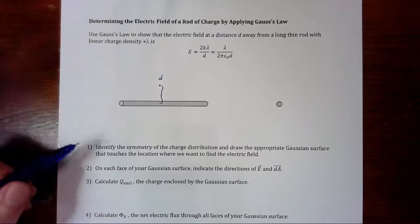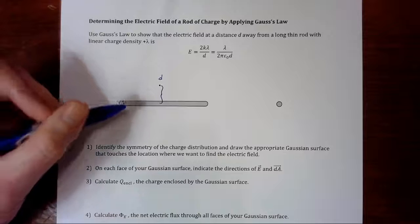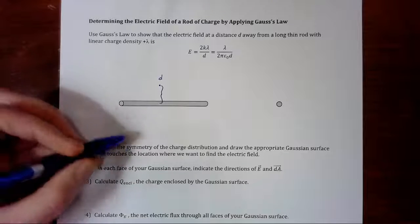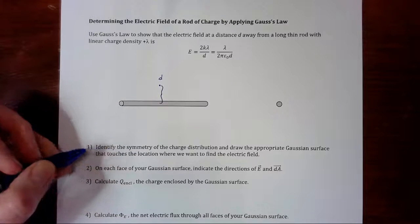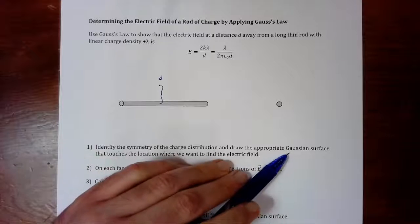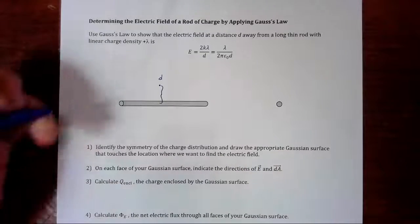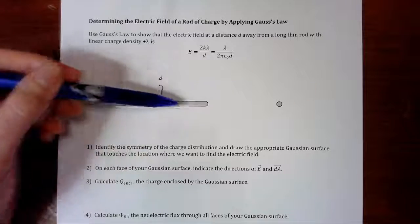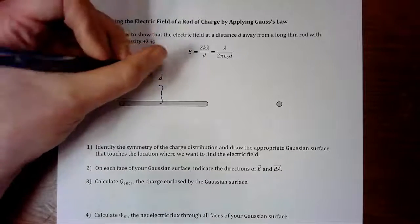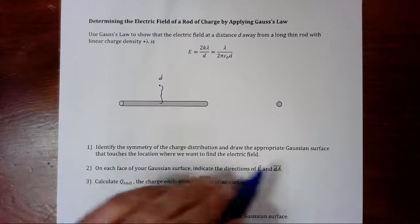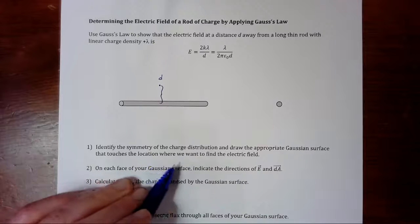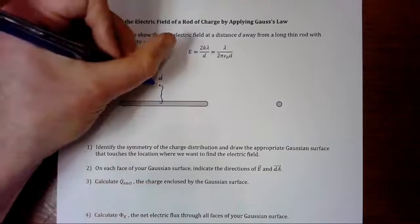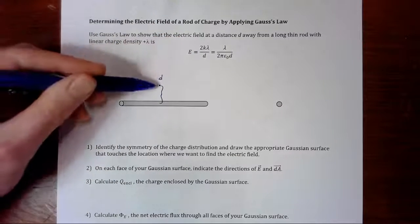Our appropriate Gaussian surface, since this symmetry is cylindrical symmetry, we are going to draw a Gaussian cylinder. And the center of the cylinder is going to have the same axis as the rod itself. And we have to make sure that our Gaussian cylinder touches the location where we want to find the electric field, so it has to touch here.